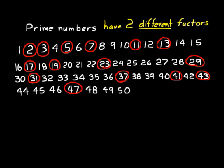So from 1 through 50, our prime numbers are: 2, 3, 5, 7, 11, 13, 17, 19, 23, 29, 31, 37, 41, 43, and 47. All of those have two and only two different whole number factors.